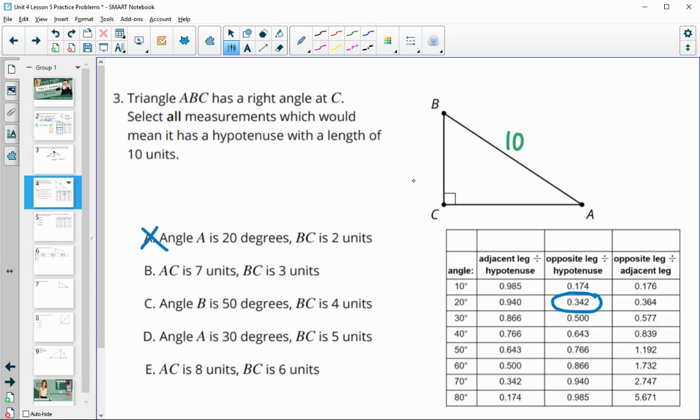Part B says what if we had AC at 7 and BC at 3? So now we've got the three sides and we could try this in Pythagorean theorem. We know that 3 squared plus 7 squared should equal 10 squared. 3 squared is 9, 7 squared is 49, that's 58. 10 squared is 100, so that's not going to work.